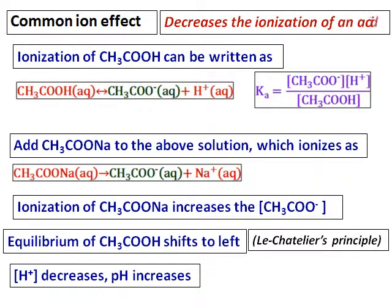Since the hydrogen ion concentration decreases, pH increases. Therefore, in any common ion effect, we can say that it decreases the ionization of an acid.